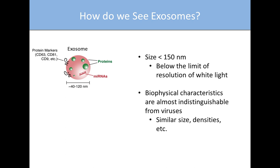So how do we see an exosome? Exosomes present a very large problem for visualization in that they are below the limit of resolution of white light. Their diameter is less than 150 nanometers, typically ranging from 40 to 120 nanometers. Inside an exosome are proteins, nucleic acids such as microRNAs and other non-coding RNAs. They are uniquely marked on their surface by proteins called tetraspanins, including CD63, CD81, CD9, and CD45, which we'll go over throughout this talk.